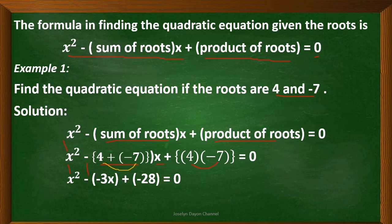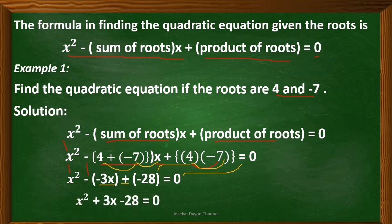Let's simplify. Copy x squared, copy the minus sign, then 4 plus negative 7 equals negative 3, so we have negative 3x. Copy the plus sign, then 4 times negative 7 equals negative 28. Now remove the grouping symbols: x squared minus negative 3x becomes positive 3x, and plus negative 28 becomes negative 28. So the quadratic equation is x squared plus 3x minus 28 equals 0.